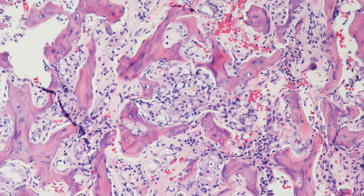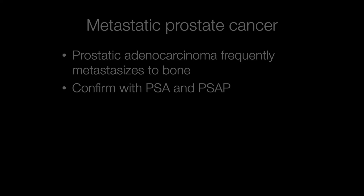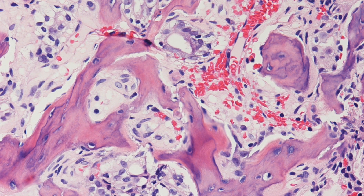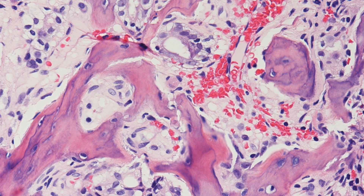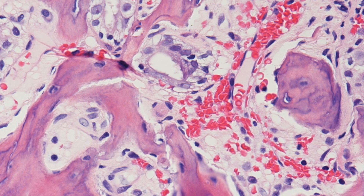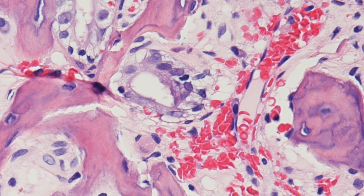The fifth case was the vertebral biopsy from a 76-year-old man. This contains metastatic adenocarcinoma — in this case prostatic adenocarcinoma. Prostatic adenocarcinoma frequently metastasises to bone, and the confirmatory markers are PSA and PSAP. Here you can see a rather sclerotic metastasis of adenocarcinoma, zooming into a well-formed gland typical of prostatic adenocarcinoma, which will show positive staining with PSA or PSAP.